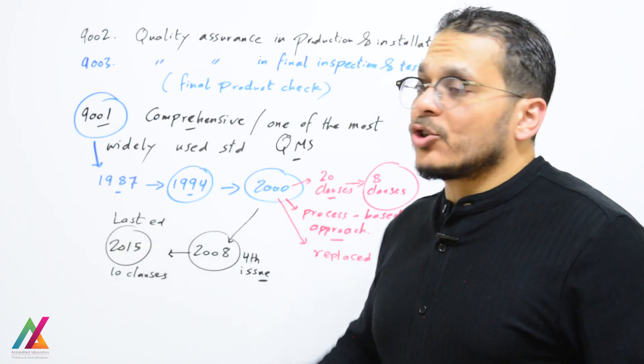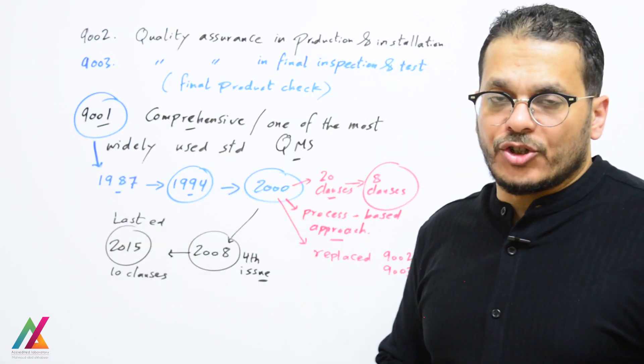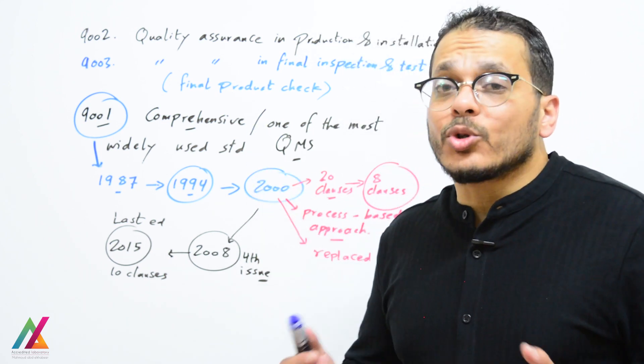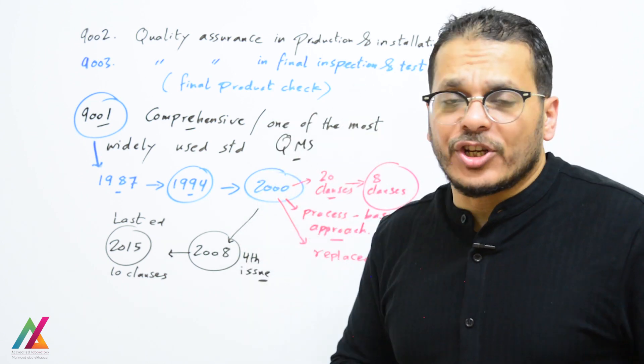The scope for ISO 9002 was quality assurance in production and installation. ISO 9003 was quality assurance in final product check or final inspection and test.